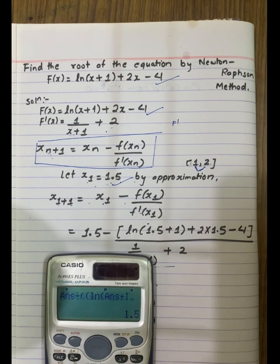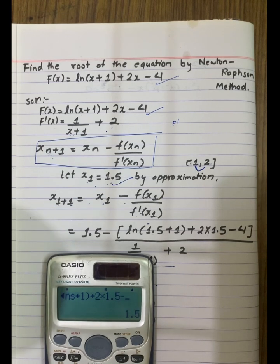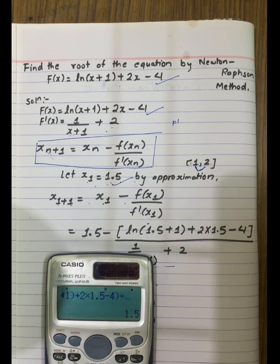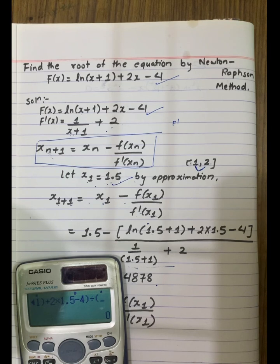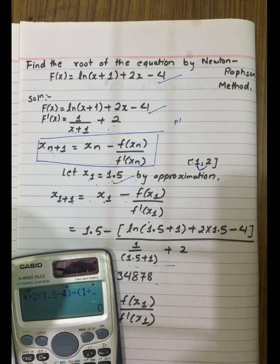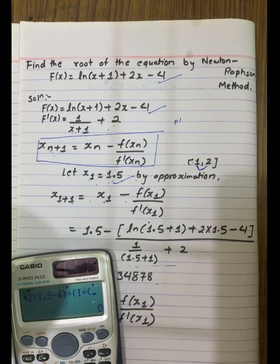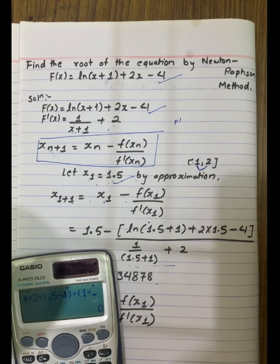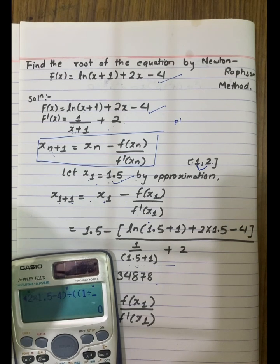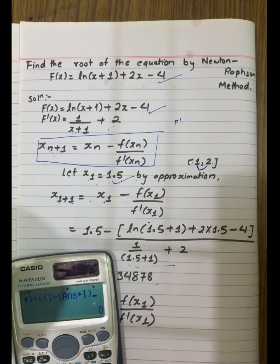Compute f(x1): ln(x1 + 1) + 2 × 1.5 - 4, divided by f'(x1) which is 1/(x1 + 1) + 2.